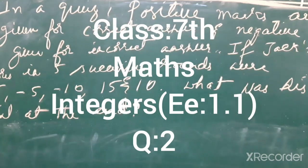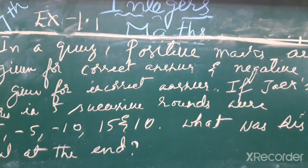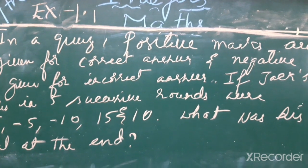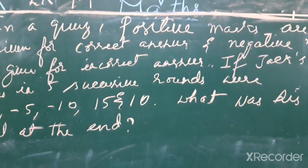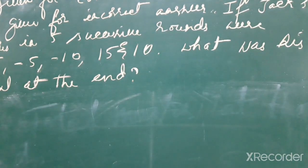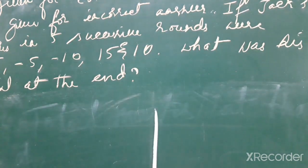Now exercise 1.1. In a quiz, positive marks are given for a correct answer and negative marks are given for an incorrect answer. If Jackson's score in five successive rounds were 25, -5, -10, 15, and 10, what was his total at the end? So here in this quiz competition, Jackson is a participant.